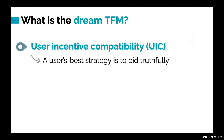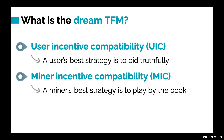There's been a line of work looking at this decentralized design question, and they converge to a set of desirable properties. First, just like in classical mechanisms, we want user incentive compatibility (UIC), which says a user's best strategy is just to bid truthfully. Besides classical requirements, we also want miner incentive compatibility (MIC), ensuring the miner's best interest is also to follow the mechanism honestly.